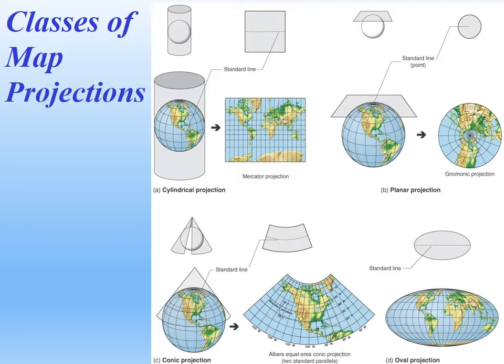The biggest point to take home is that no map is free of distortions. No matter how fancy the computer is and the math behind it, we still can't have something flat that represents something round that is free of distortion.